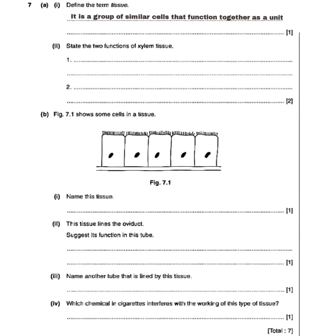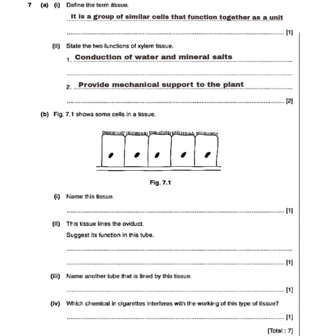For Roman numeral number two, it is saying: state the two functions of xylem tissue. Xylem tissue is found in the vascular bundles along with the phloem tissue. The first function is the conduction of water and mineral salts. The second function is that xylem provides mechanical support to the plant.